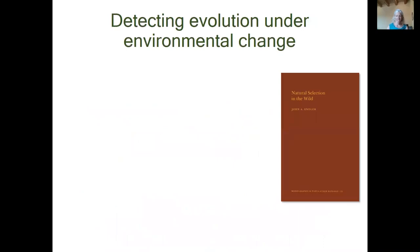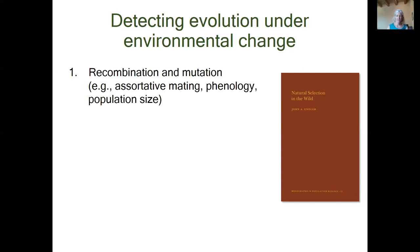To detect evolutionary change in response to changes in the environment requires considering the four processes that influence evolution. This framework is intended to inspire researchers at other sites to begin thinking about when and where evolutionary responses may be most important to predicting long-term ecological change. First, recombination and mutation influence allele frequencies. Environmental changes can affect processes that influence recombination, such as assortative mating, phenology, and population size.